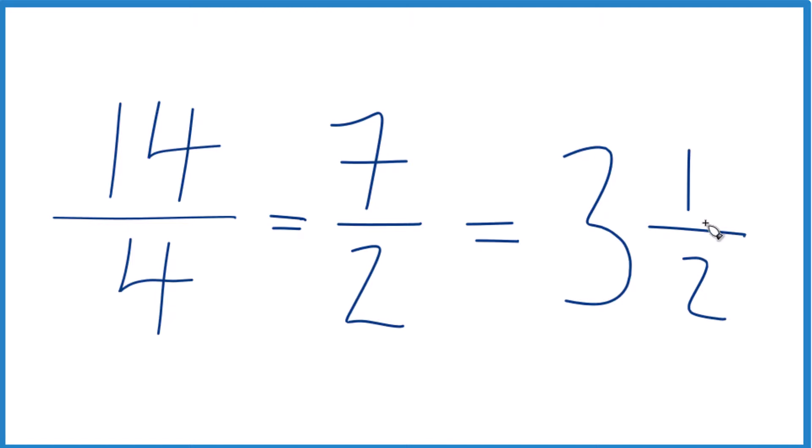You can check that too. 3 times 2 is 6, plus 1, that's 7, and then we just brought this 2 across for our denominator.